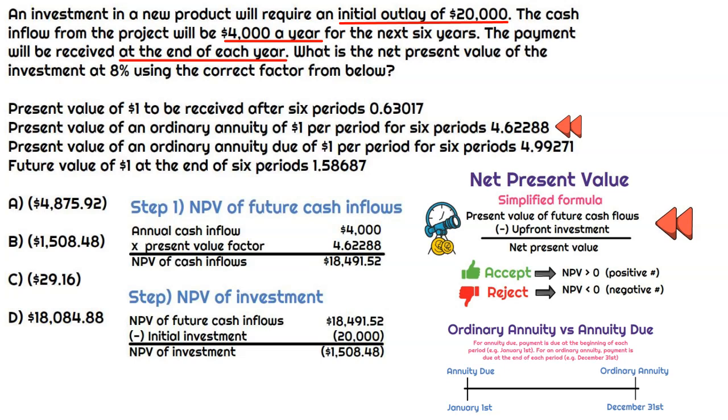So this is our step two. So we'll take that $18,491.52, subtract the initial investment of $20,000. And guess what? This is actually going to be a negative number of $1,508.48. So that's going to be the correct answer.